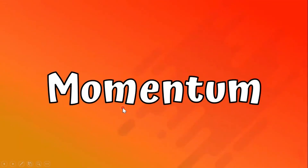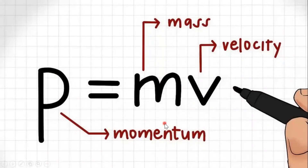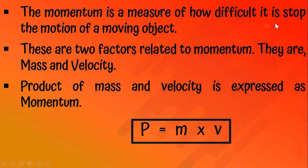This is our final topic: momentum. The equation to find momentum is p equals mv, where p means momentum, m means mass, and v is velocity. Momentum is a measure of how difficult it is to stop the motion of a moving object. The two factors related to momentum are mass and velocity. The product of mass and velocity is expressed as momentum.